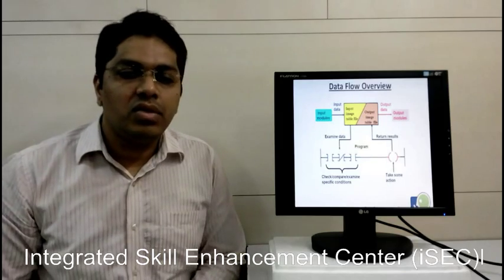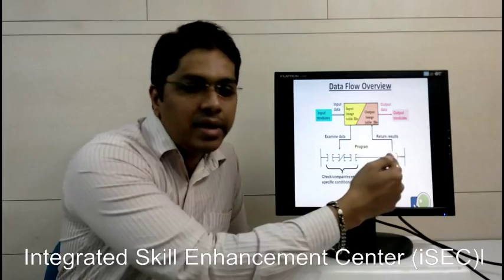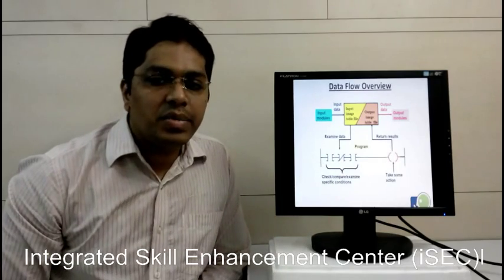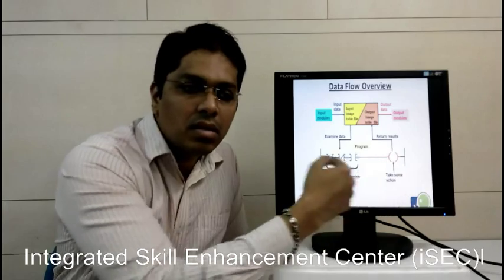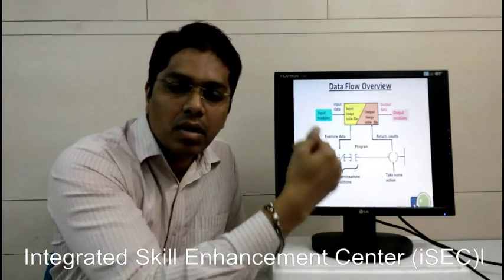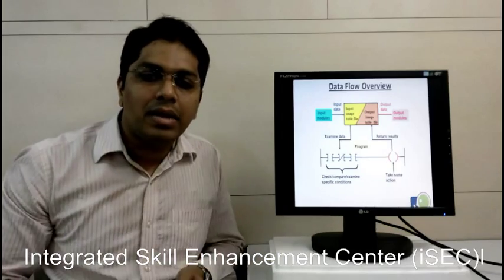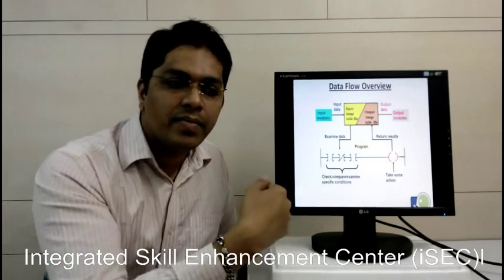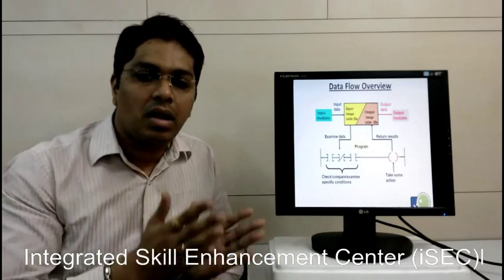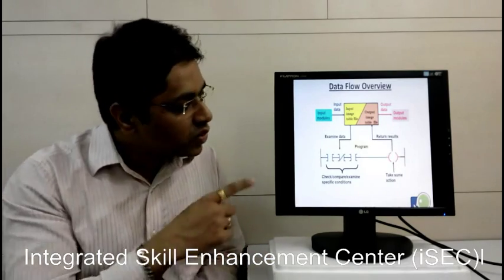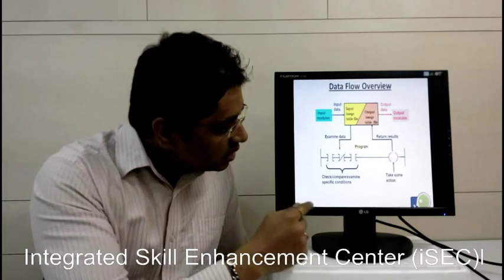This is the data flow overview of the PLC programming. This horizontal line is called rung in the PLC programming. As we go on adding these one by one below each other, it will be shown like two parallel lines and multiple horizontal lines. It will form the structure like a ladder, so this programming language is known as ladder logic.